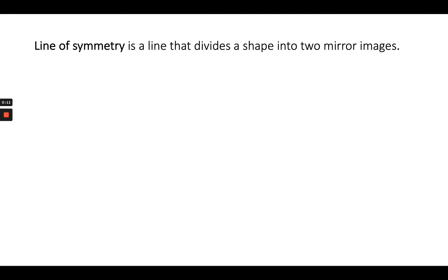A line of symmetry is a line that divides a shape into two mirror images. You can fold a shape along a line, and if the parts line up with each other, you have a line of symmetry.